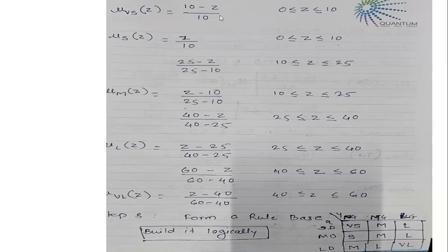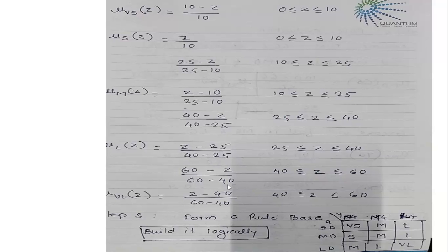Here z is the variable for wash time. For very small (0 to 10): (10 − z) / 10. For small: z / 10 for 0 to 10, and (25 − z) / 15 for 10 to 25. For medium: (z − 10) / 15 for 10 to 25, and (40 − z) / 15 for 25 to 40. For large: (z − 25) / 15 for 25 to 40, and (60 − z) / 20 for 40 to 60.